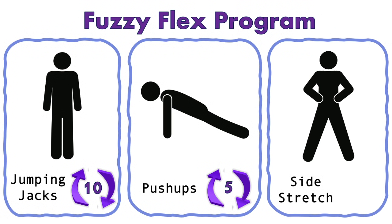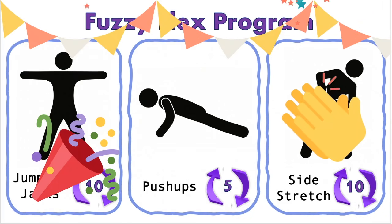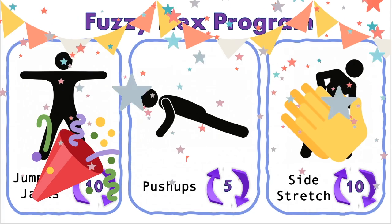The final move is the side stretch. One looks like this. Let's loop this action five times. One, two, three, four, five. Six, seven, eight, nine, ten. Nice job. You completed the fuzzy flex program.